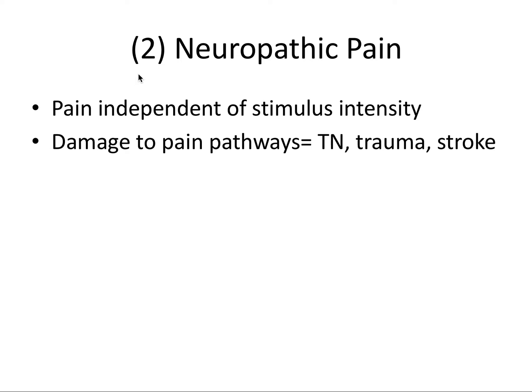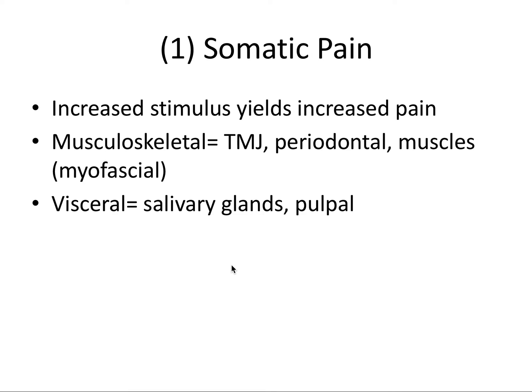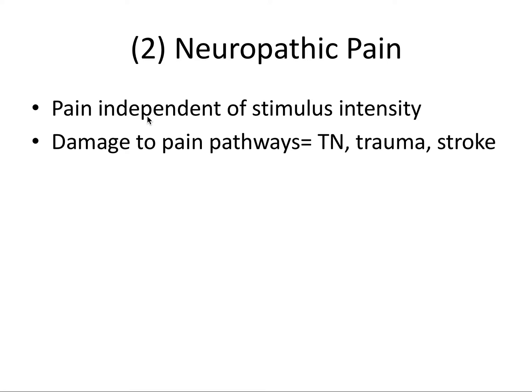Our second category of pain is neuropathic pain, and this will be the most important category in terms of this video. Whereas somatic pain was dependent on the magnitude of the stimulus, neuropathic pain is independent of the stimulus intensity. It involves some sort of damage to those pain pathways that we talked about before. Some examples of this are trigeminal neuralgia, stroke, and trauma.